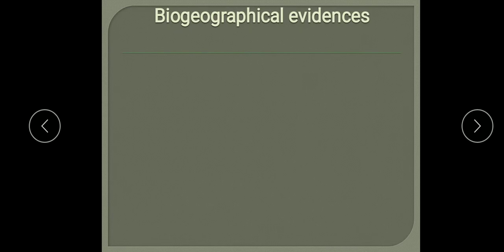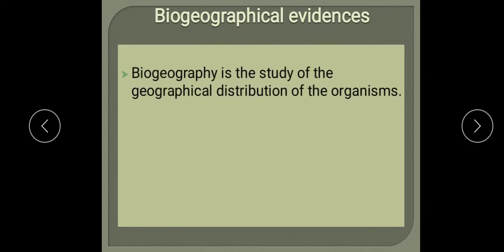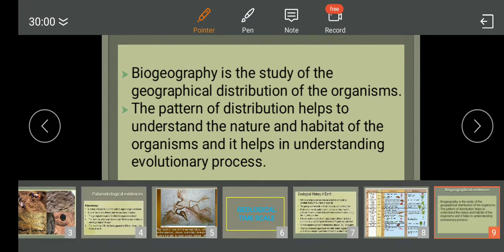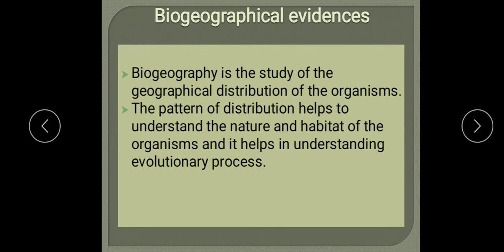Now we will study biogeographical evidences. Biogeography is the study of geographical distribution of organisms — that is the distribution of plants and animals in different areas of the earth. The pattern of distribution of organisms helps to understand the nature and habitat of organisms and the evolutionary process. No organism is uniformly distributed all over the world; each is restricted to a definite area, and each geographical range has specific flora and fauna.